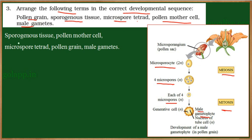First it is the sporogenous tissue, which is present in the pollen sac. Then they become the pollen mother cells, which give rise to the microspore tetrad by the process of microsporogenesis. This microspore then develops into the pollen grain, and these pollen grains will give rise to the male gametes. Pollen grains are nothing but the male gametophyte.